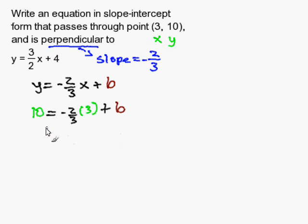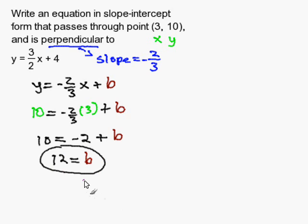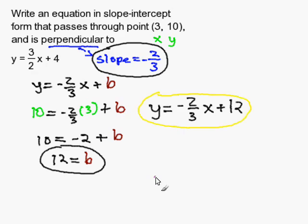To solve for b, I simplify my equation. Negative 2 thirds times 3 is negative 2 plus b. I add 2 on both sides and b is 12. Now that I have my y-intercept and my slope, I can write my slope-intercept equation, which is y equals negative 2 thirds x plus 12. And this completes my problem.